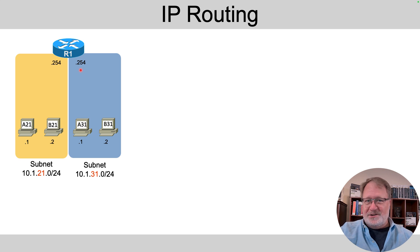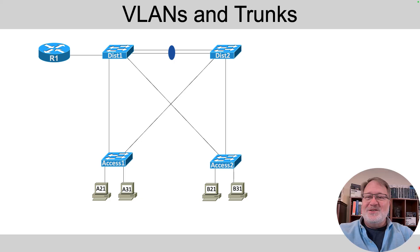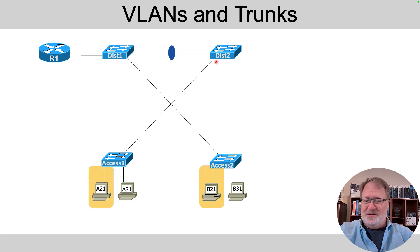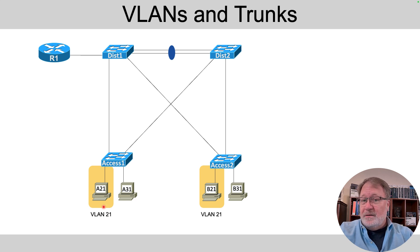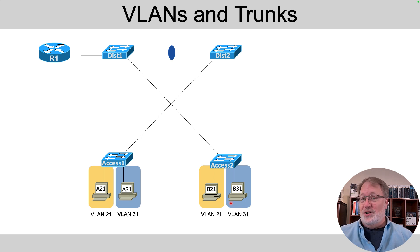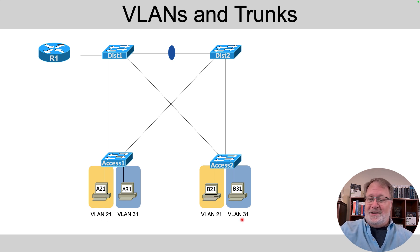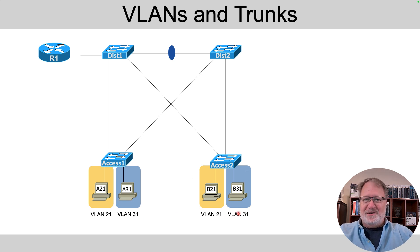That's the pre-configuration. Now let's talk about what you need to configure. The configuration you add will be on those four switches — access one and two, and distribution switches one and two. For VLANs, A21 and B21 are in the same subnet and will also be in the same VLAN — VLAN 21. A31 and B31 will be placed in a second VLAN, VLAN 31. I picked those names because they match the VLAN numbers, just to keep things clear in lab.